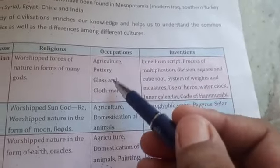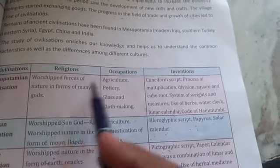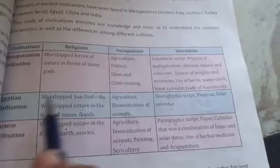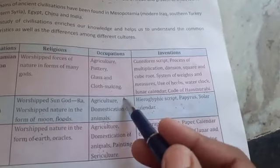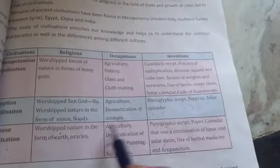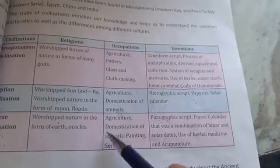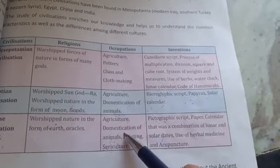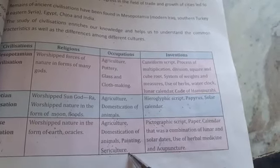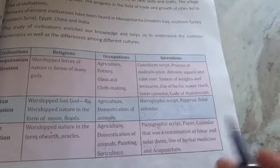Second — occupation. The people of Mesopotamian civilization practiced agriculture, made pottery, and also worked in glass and cloth making. People of Egyptian civilization did agriculture and domestication of animals. In Chinese civilization, they practiced agriculture, domestication of animals, painting, and sericulture — raising silkworms to produce silk. So occupations are also largely similar across all three.